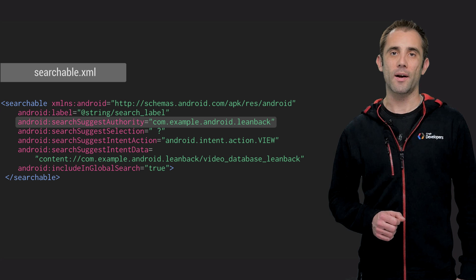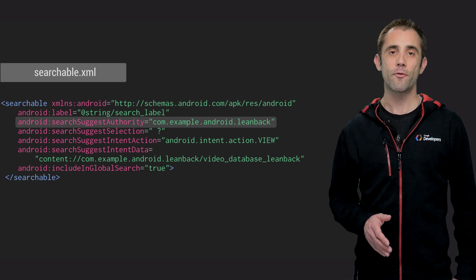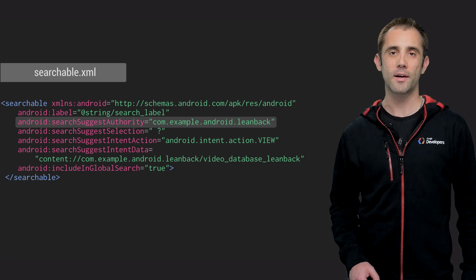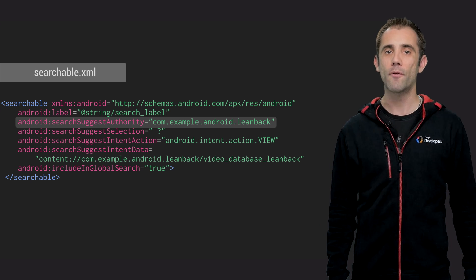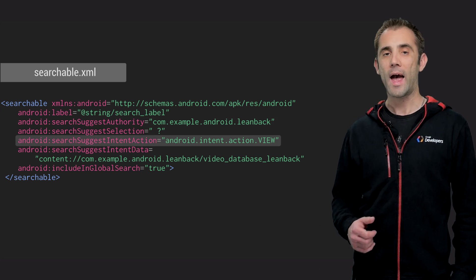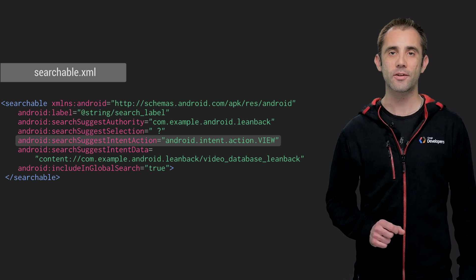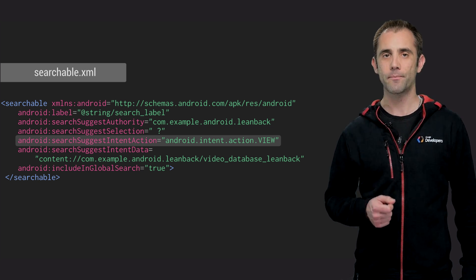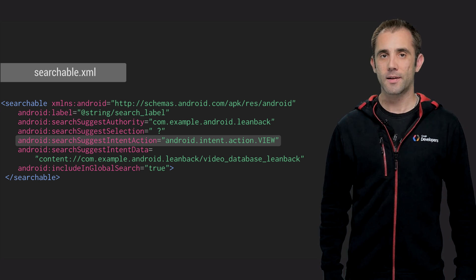The search suggest authority uniquely identifies your content provider. Therefore, this value must match the authority string provided in the Android authorities attribute of the Android manifest provider element. And search suggest intent action is the default intent action to be used when a user clicks on a search result. Mainly this is a view intent that we use here.